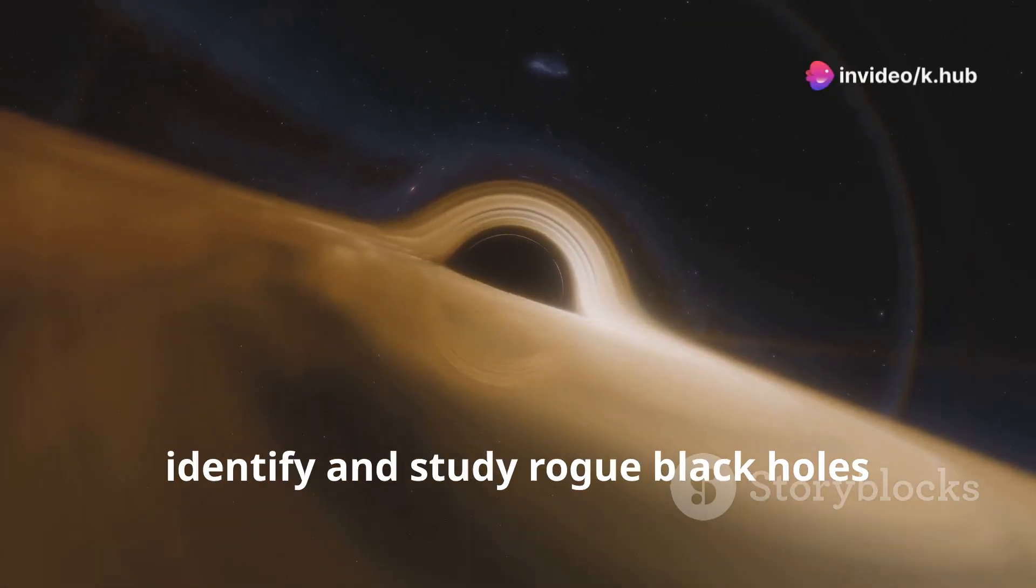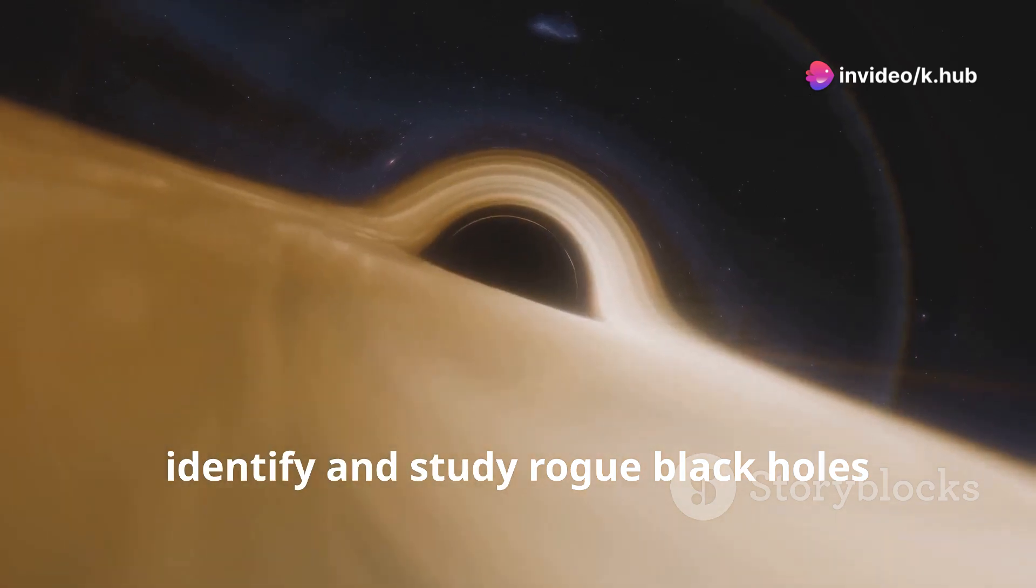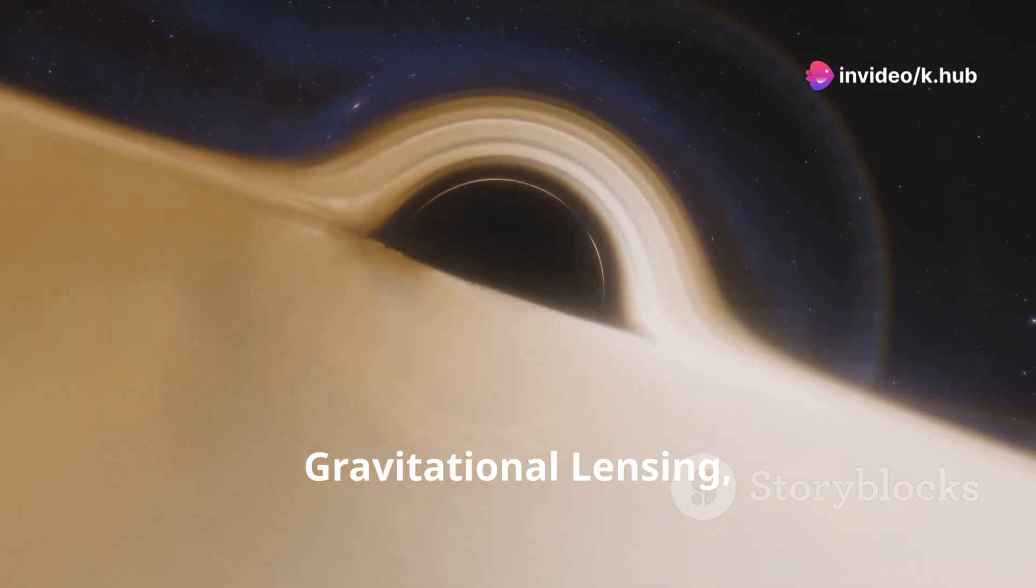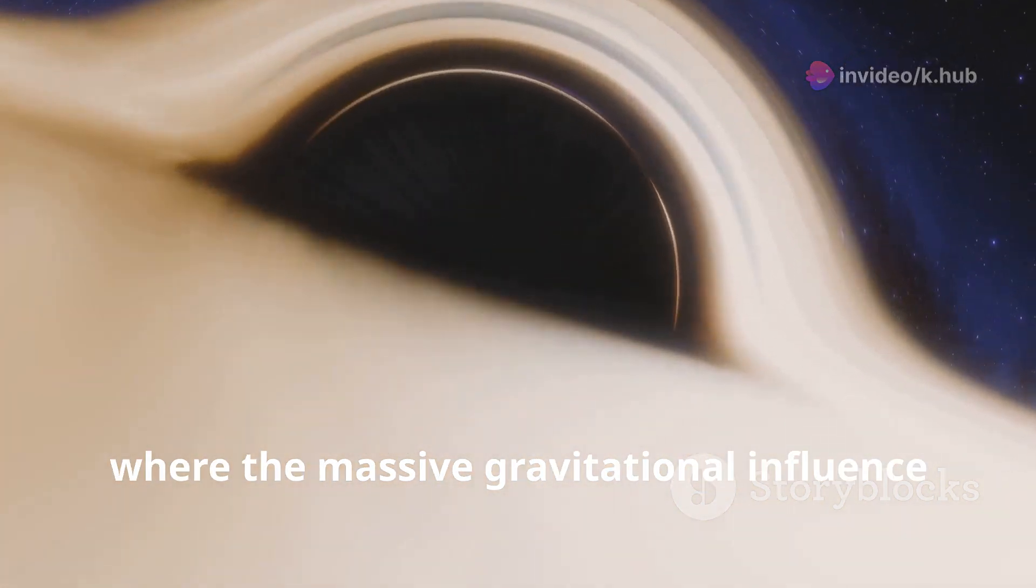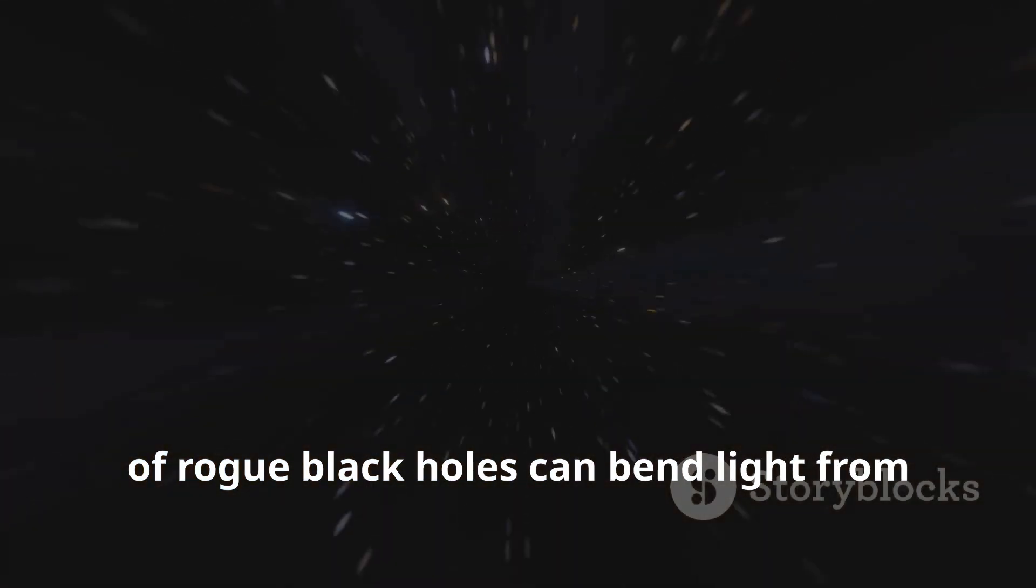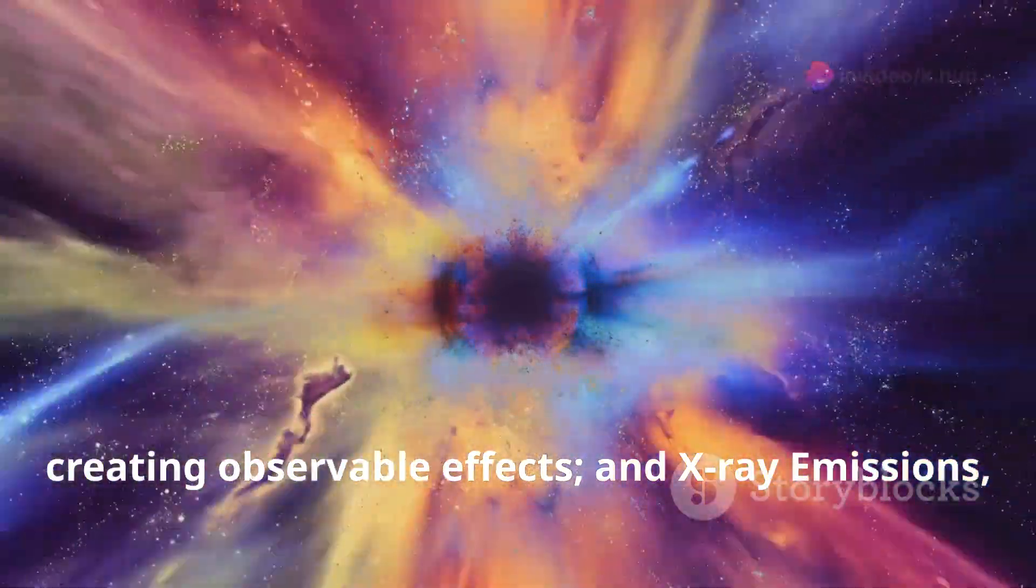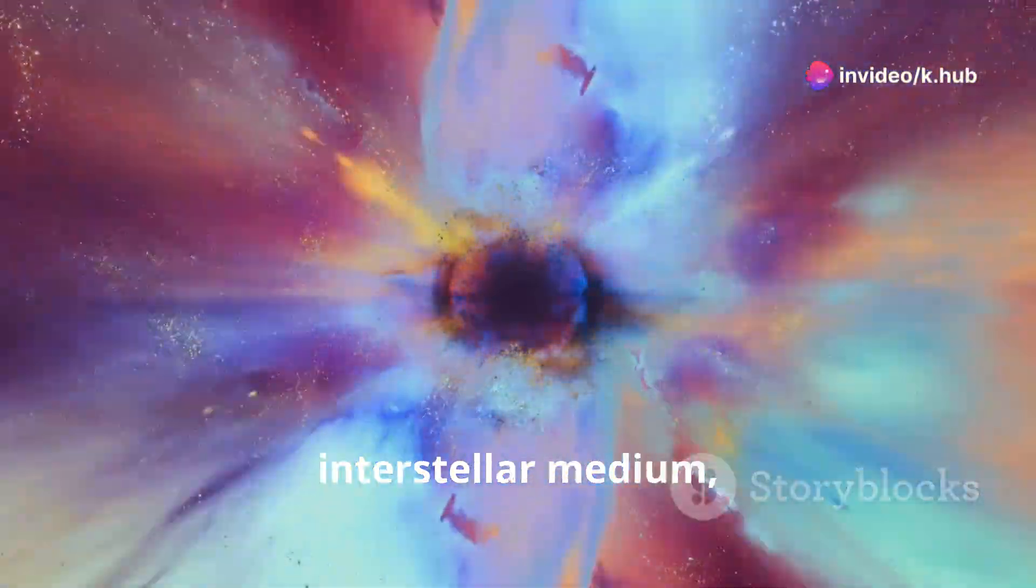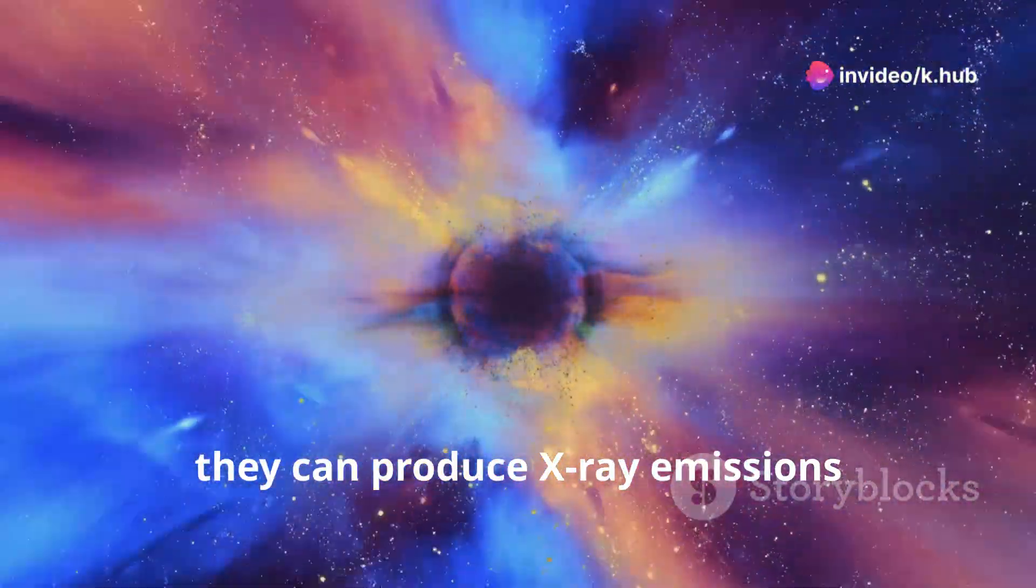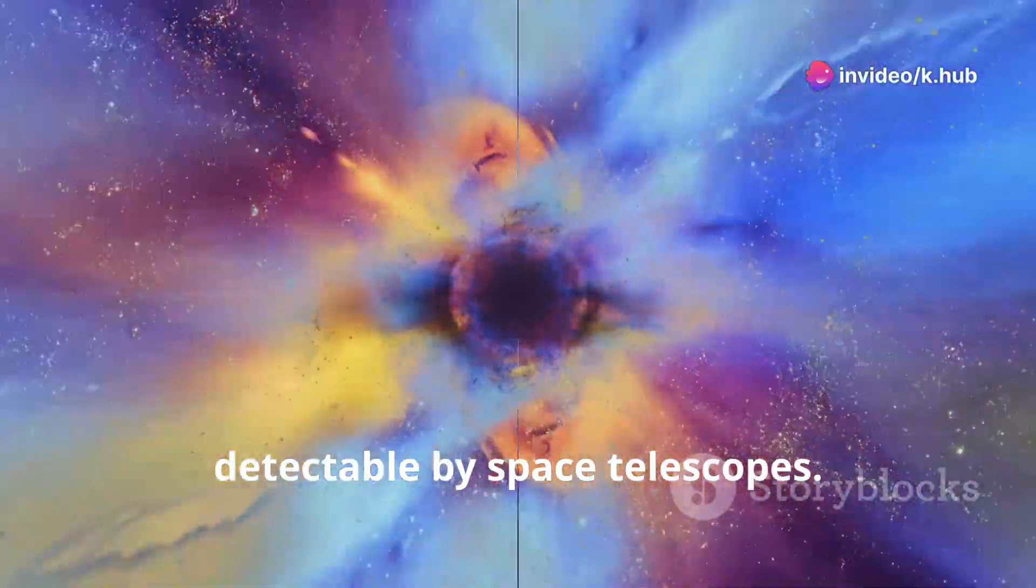Astronomers have used various methods to identify and study rogue black holes. Gravitational lensing, where the massive gravitational influence of rogue black holes can bend light from background objects, creating observable effects, and X-ray emissions. As black holes interact with the interstellar medium, they can produce X-ray emissions detectable by space telescopes.